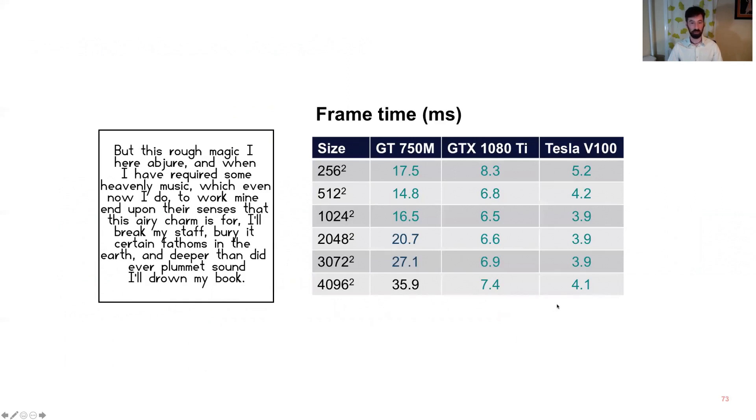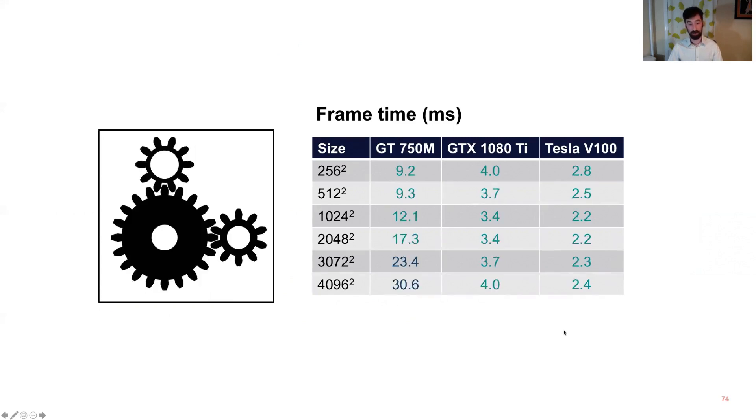And the text model does great. On the biggest GPU, it's effectively flat with image size, which means that we're pretty far from saturating the GPU, and this is at 100 plus frames per second at 4096 pixels squared. For the gears, it's even faster actually, probably because there's fewer clauses, but this is 30 frames per second on my old laptop and hundreds of frames per second on the big GPU, even at the biggest image size.